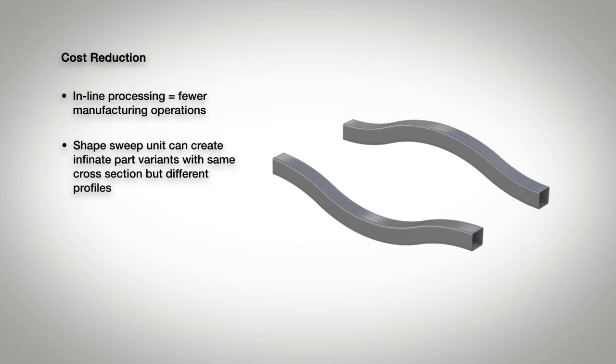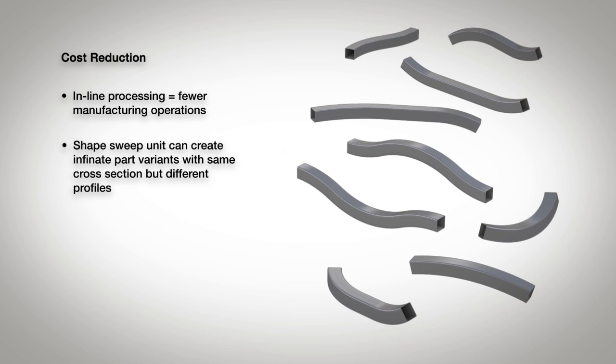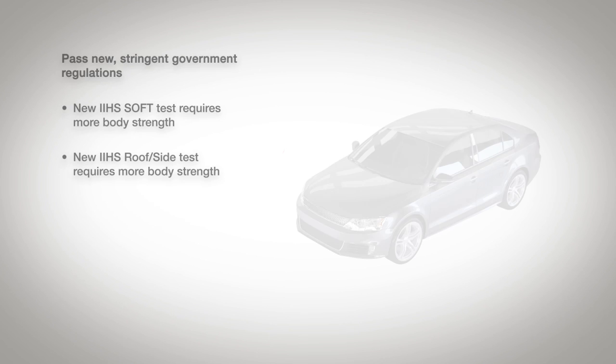The shape sweep unit can even create multiple parts with the same cross section, but different profiles. Multi-dimensional sweeping allows you to put the strength where you really need it and pass new strict IIHS crash regulations.